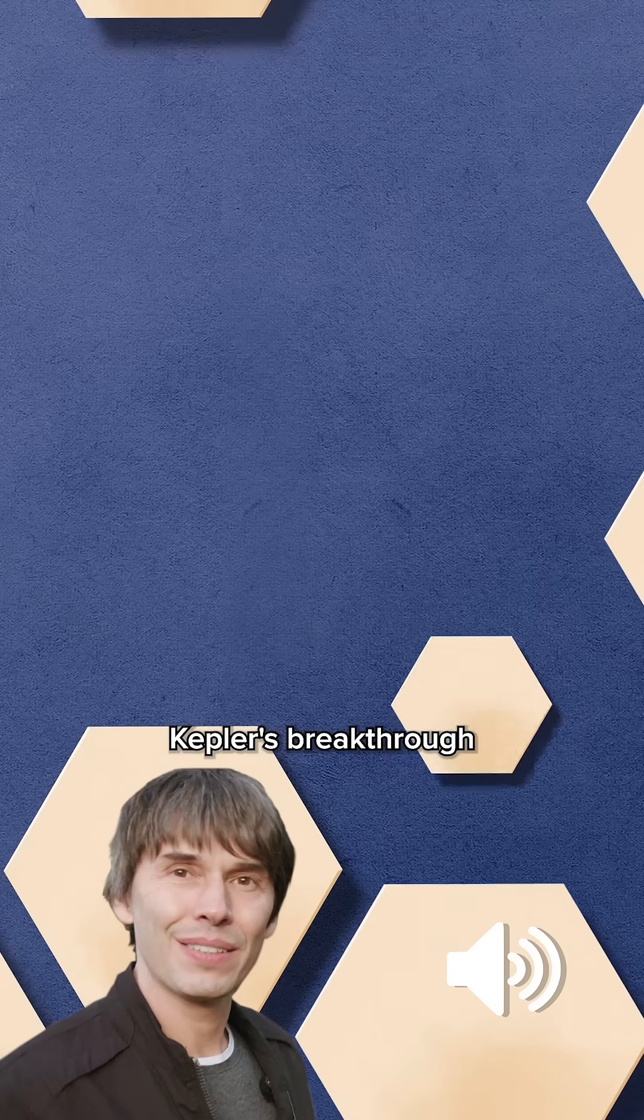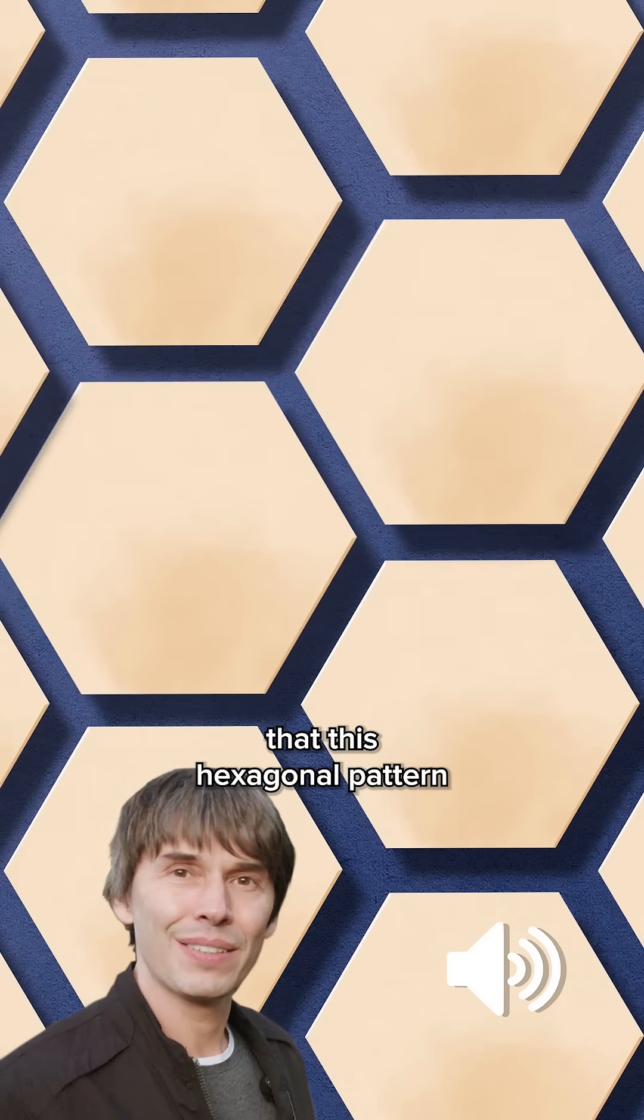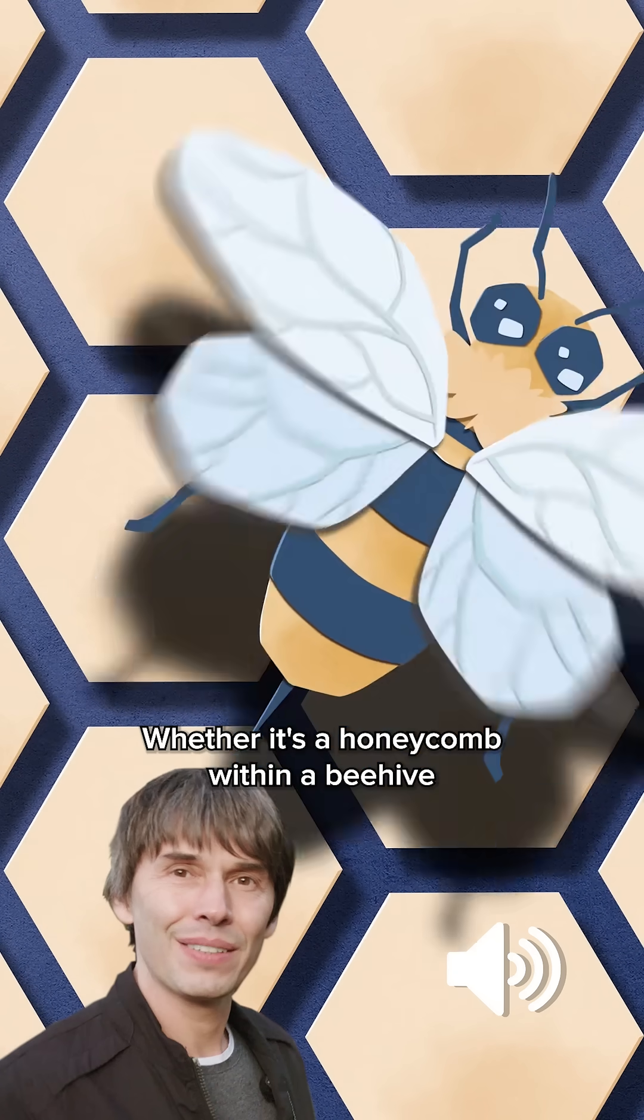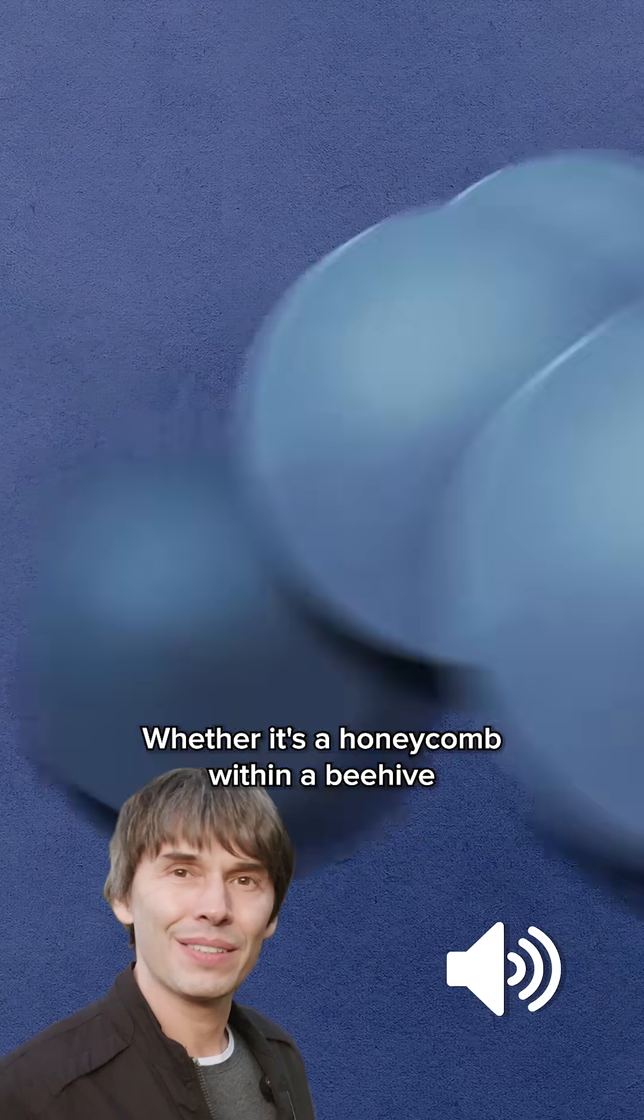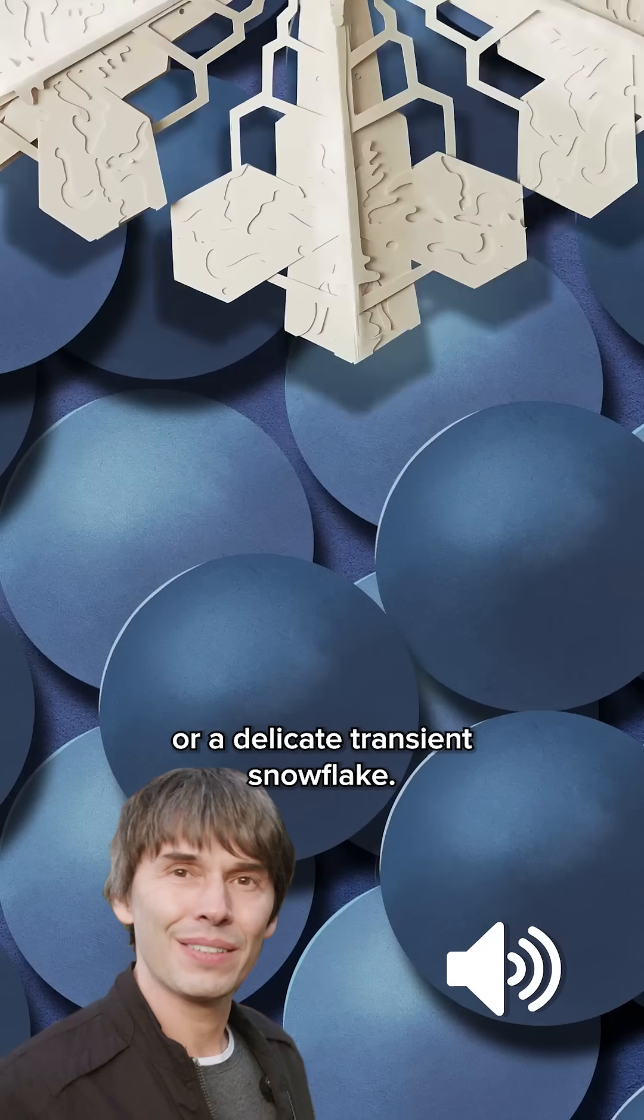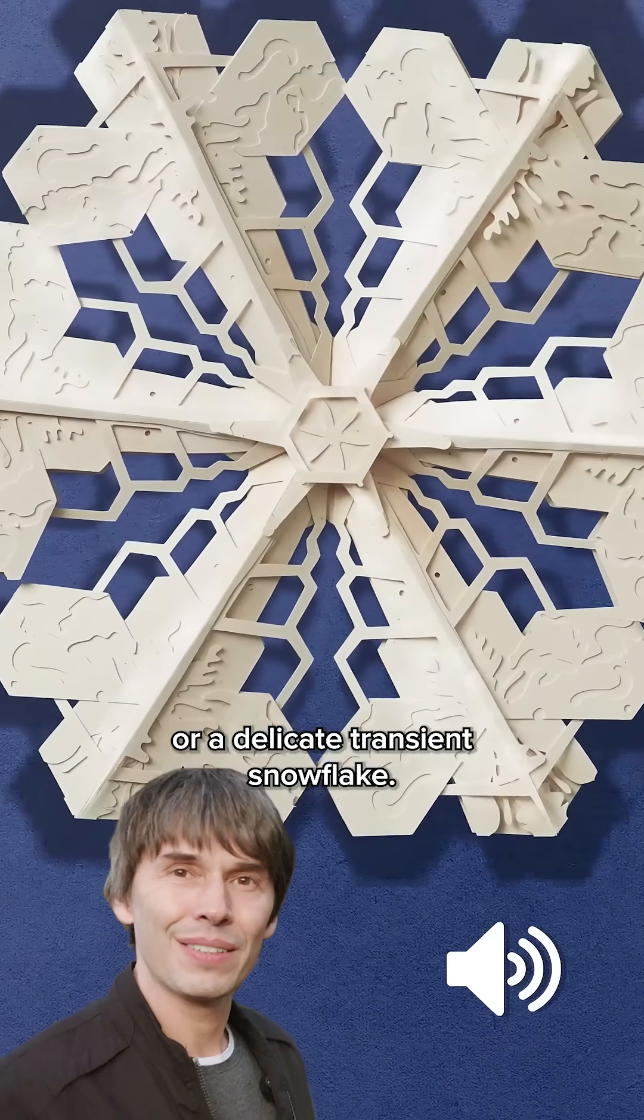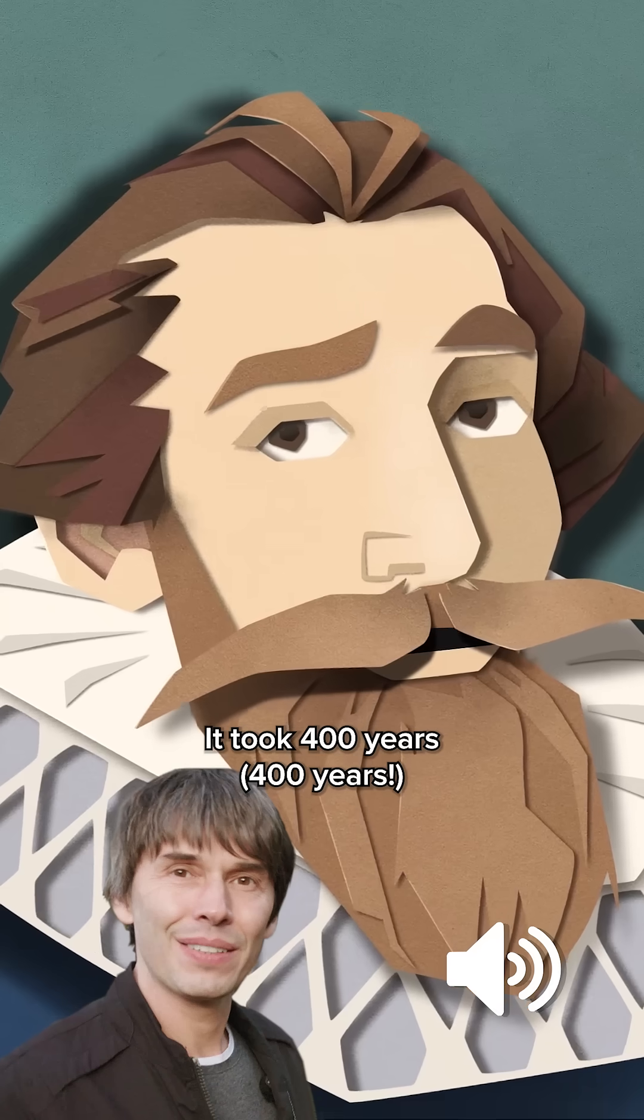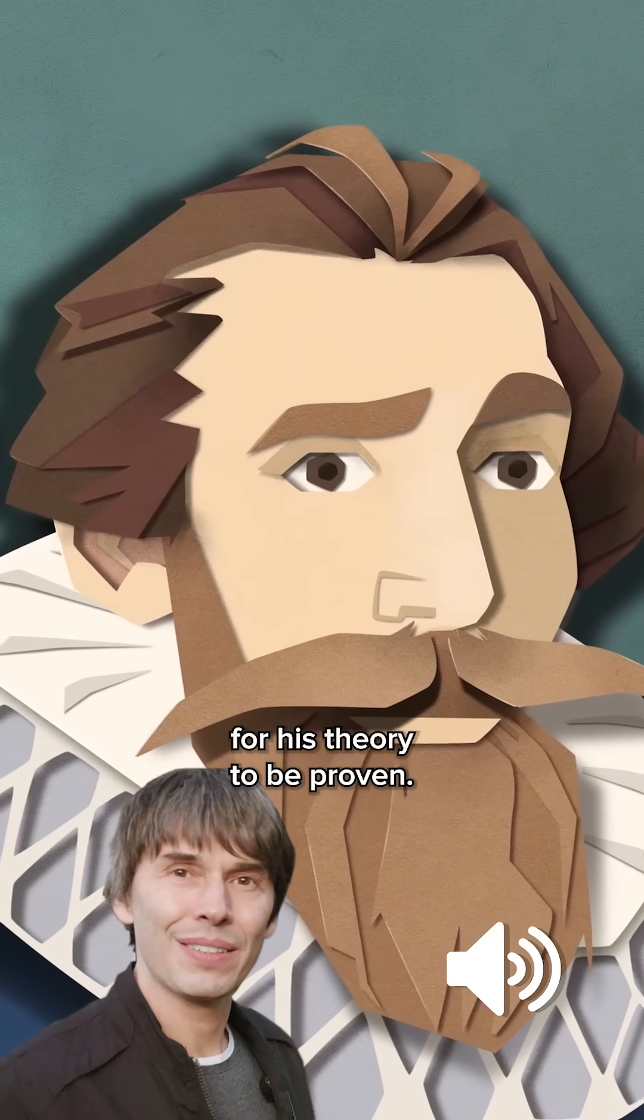Kepler's breakthrough was his theory that this hexagonal pattern is the most efficient use of space, whether it's a honeycomb within a beehive, or piles of stacked cannonballs, or a delicate transient snowflake. It took 400 years for his theory to be proven.